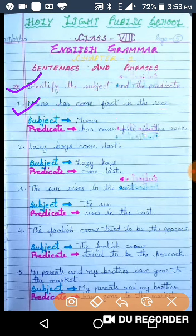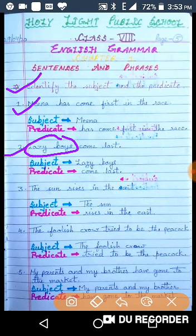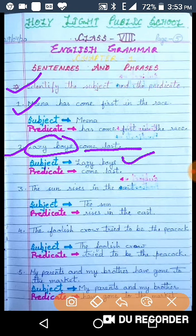Second is: Lazy boys come last. इस sentence में बात किसके बारे में हो रही है? इस sentence में बात हो रही है lazy boys के बारे में. तो verb है come, तो come से लेकर rest of the sentence is predicate. इस तरह से subject हो जाता है lazy boys और come last is predicate.